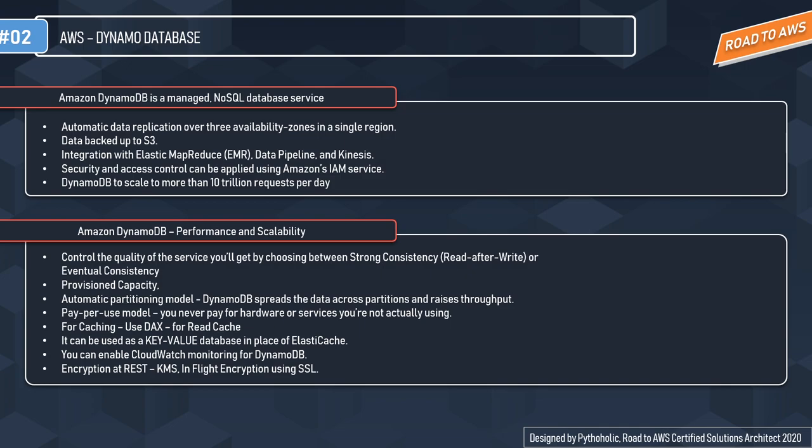For backups, data is securely backed up to S3. DynamoDB also provides integration with Elastic MapReduce (EMR), Data Pipelines, and Kinesis. For security, access controls can be applied using Amazon IAM services. When it comes to read consistency, DynamoDB provides both strong and eventual consistency.